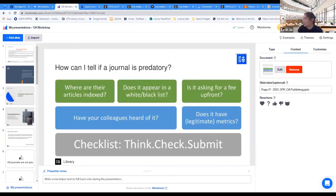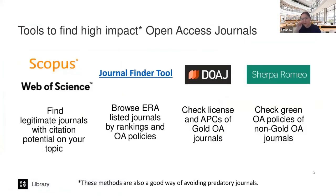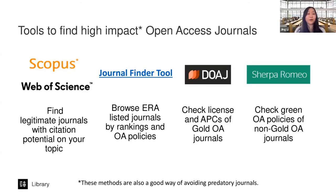Now I'll hand over to Jing to talk about tools to find high-impact open access journals. As you can see on this slide, we list five tools whose combination can be very powerful for avoiding predatory journals and finding high-impact journals to publish your research output.